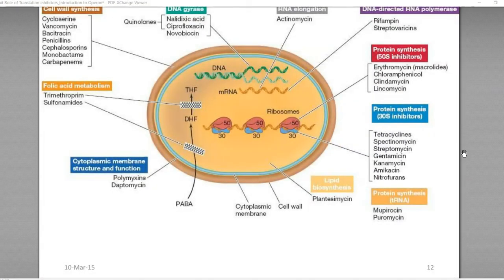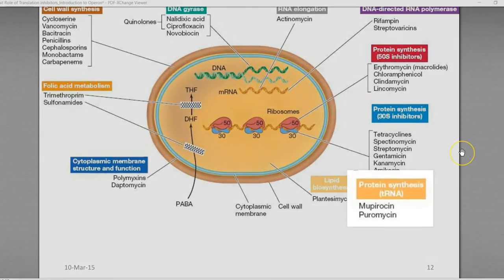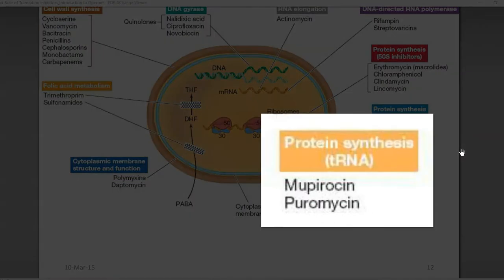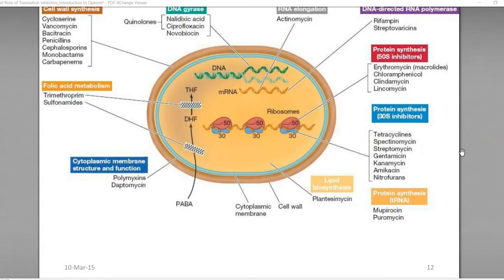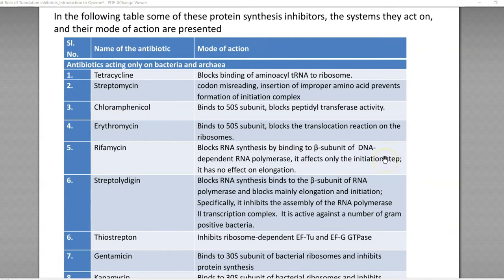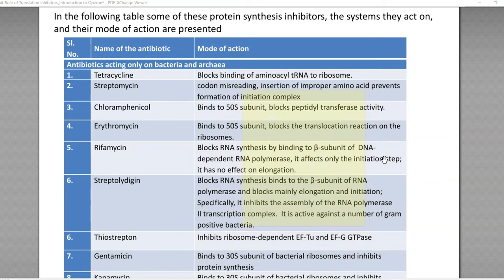Apart from that, there are certain classes of antibiotics that can influence the protein synthesis process by interfering with the activity of the tRNA molecule. The following is a table containing some of the important protein synthesis inhibitors, showing the system they act on and the mode of action of each particular antibiotic.